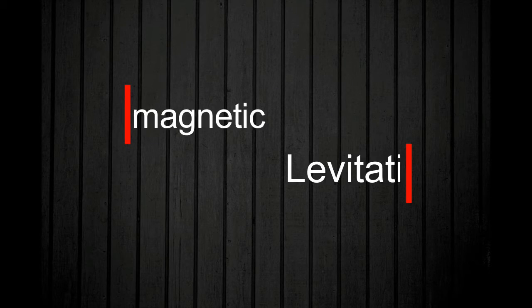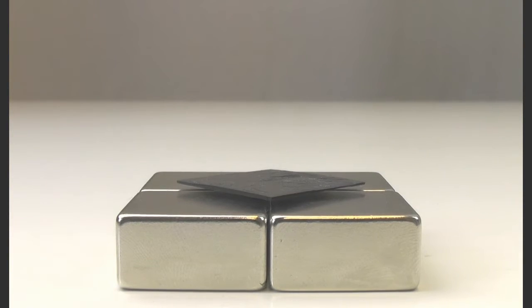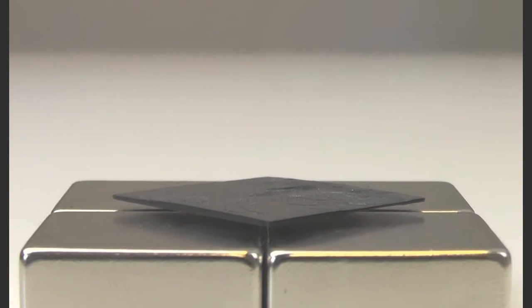In this video, we demonstrate diamagnetic levitation using strong rare earth magnets and pyrolytic graphite, a very pure form of carbon. Properly aligned, a piece of this graphite can float over a group of magnets.